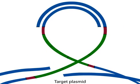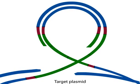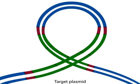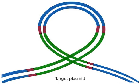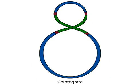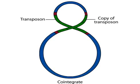The single-stranded regions of the DNA are replicated. The resulting plasmid is called a cointegrate. It contains the original transposon and a new copy.